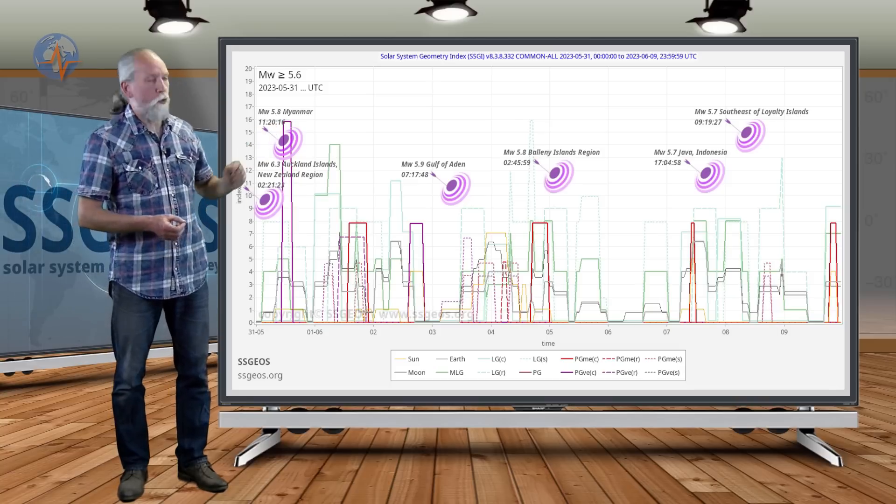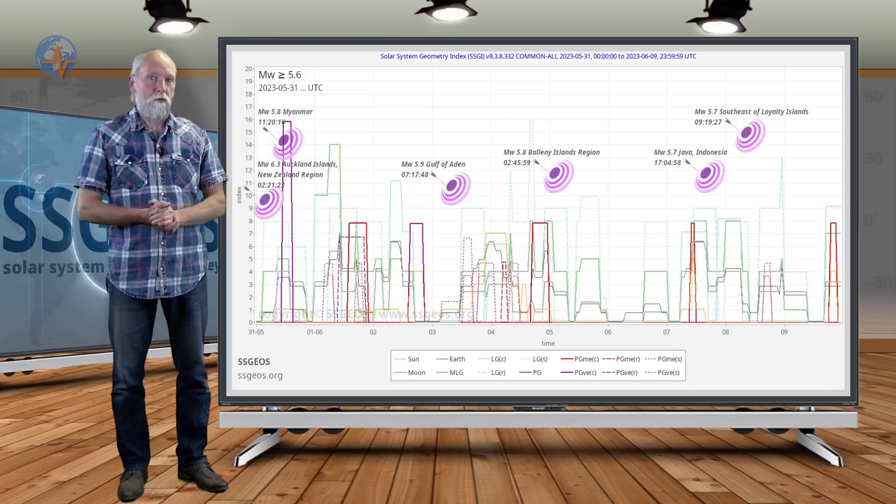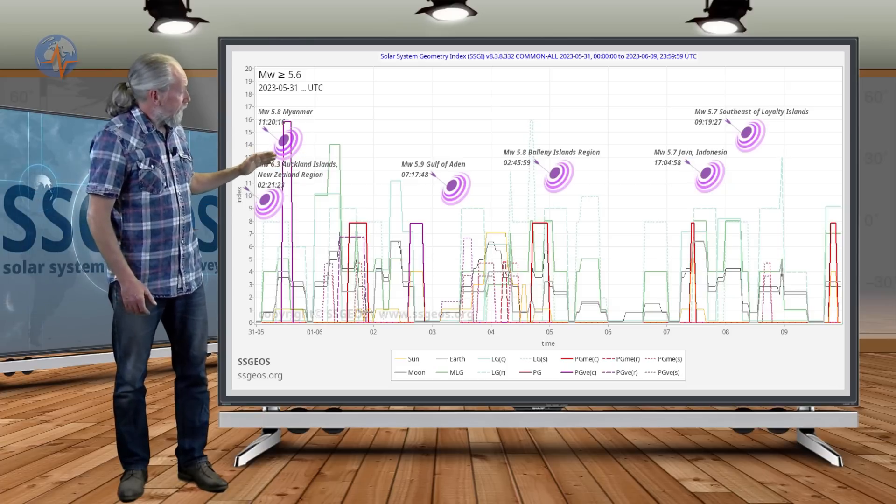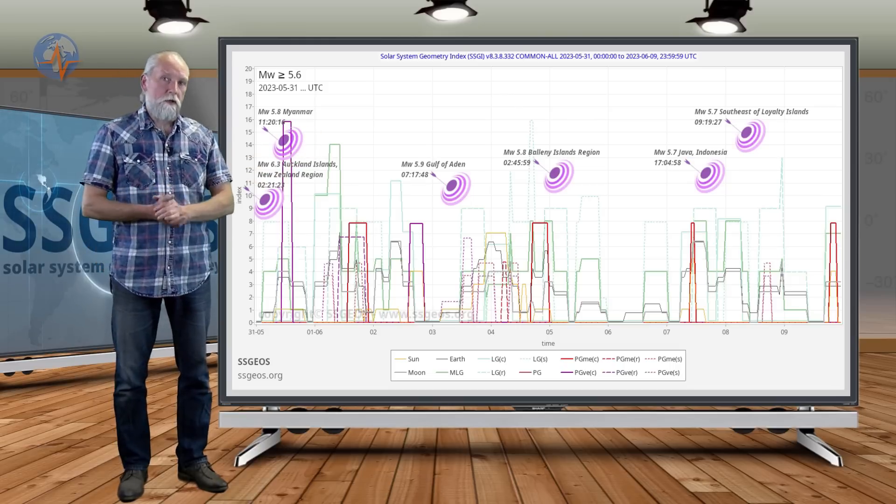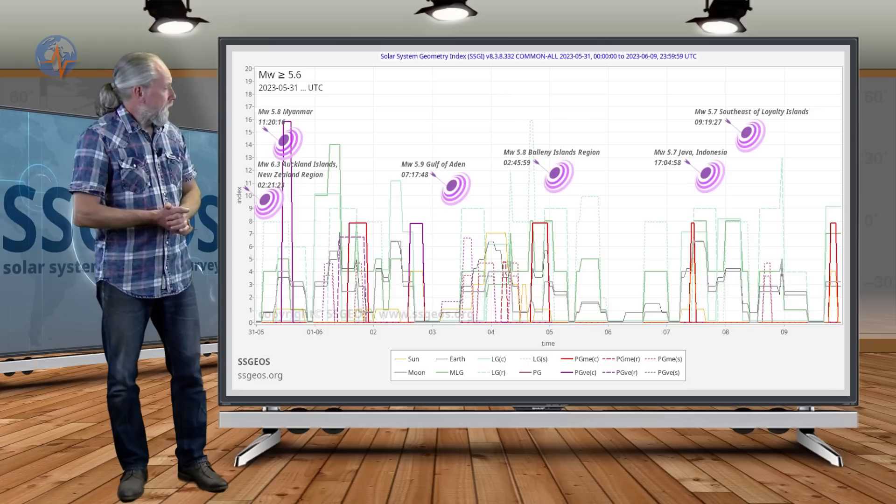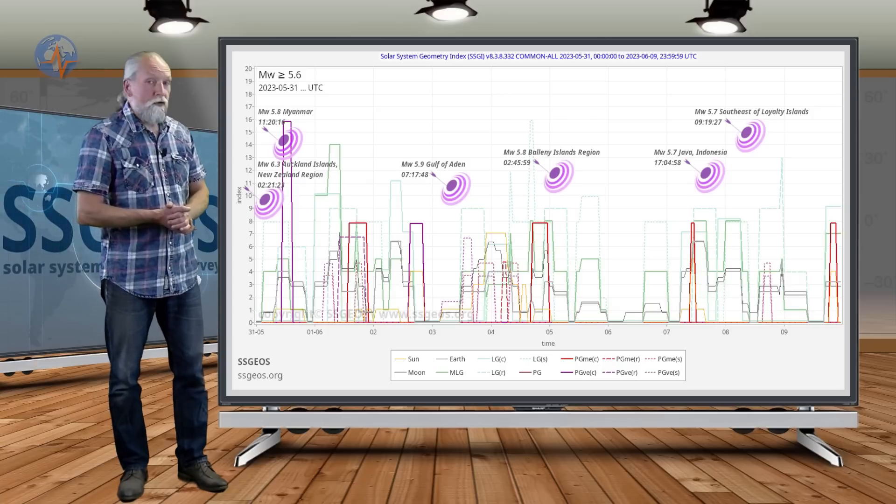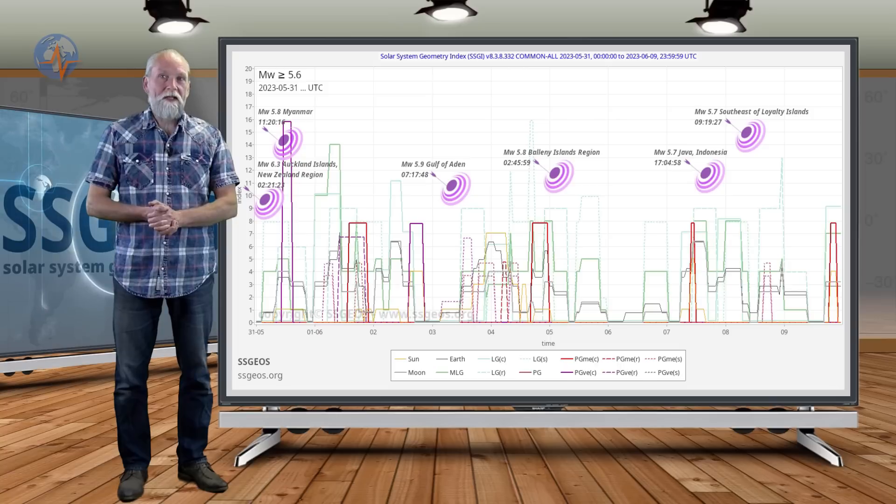And then yesterday and this morning two magnitude 5.7 earthquakes. As you can see, these stronger earthquakes basically occur following planetary conjunctions. But again, no magnitude 6 or larger earthquake so far.